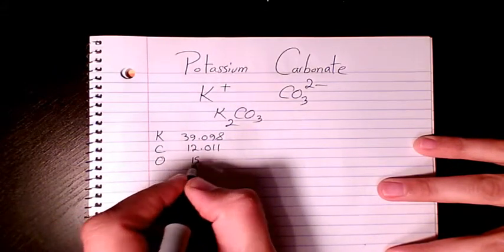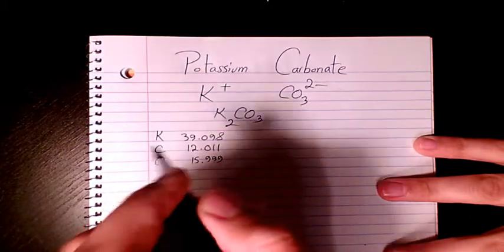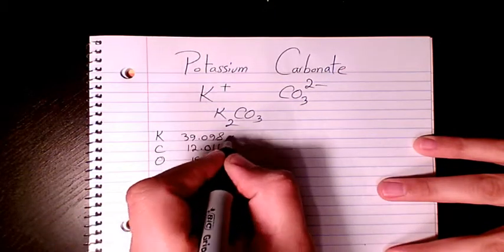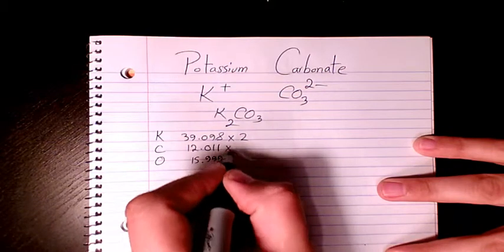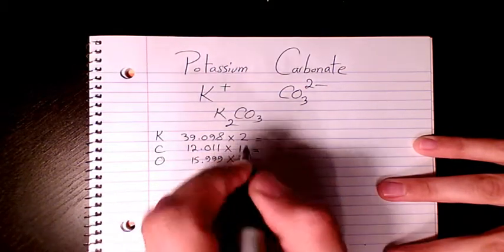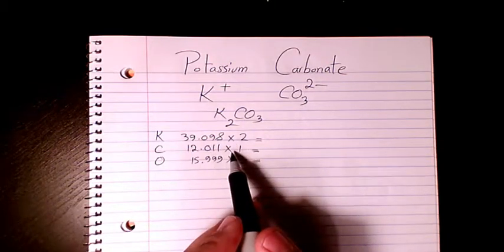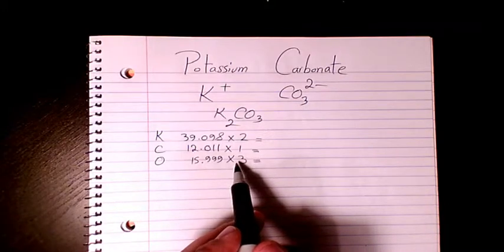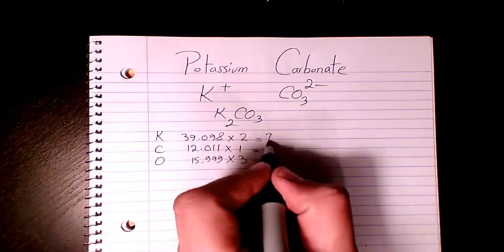So potassium, we have two of them. Carbon, one. And oxygen is three. So then I need to multiply each of them and then calculate it. So then it's gonna be 39.098 times two, which is 78.196.